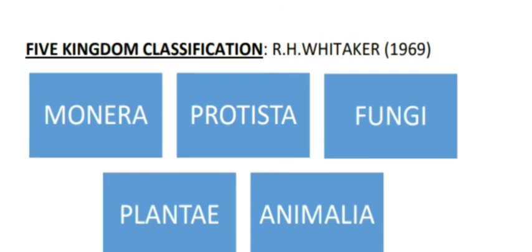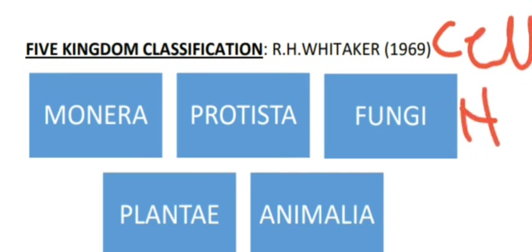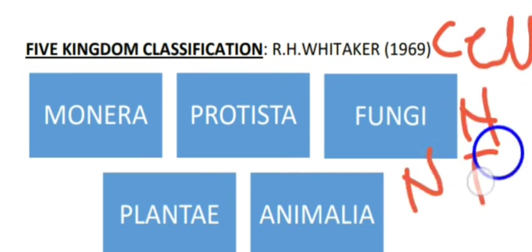The five kingdom classification was based on the following criteria: cell wall, nuclear membrane, mode of nutrition, and reproduction. These are the bases of classification, and more details will be discussed in the next video.